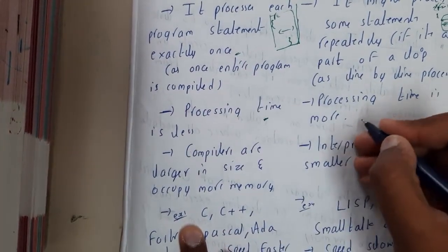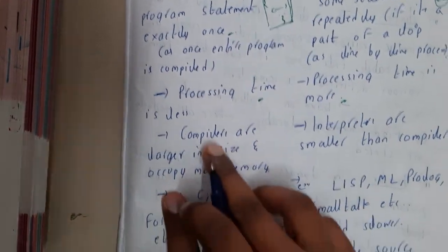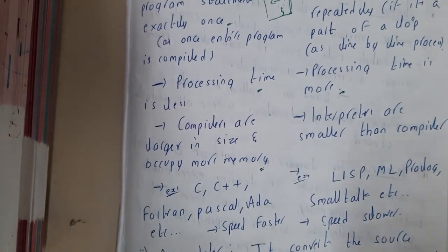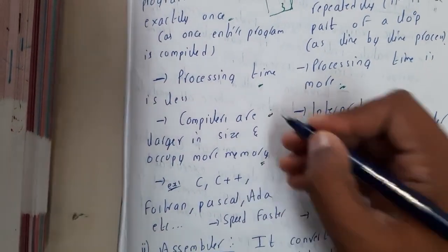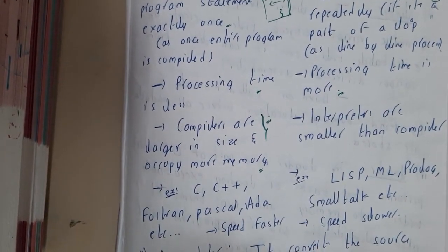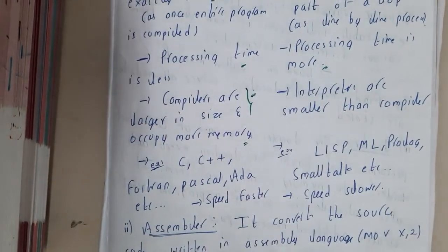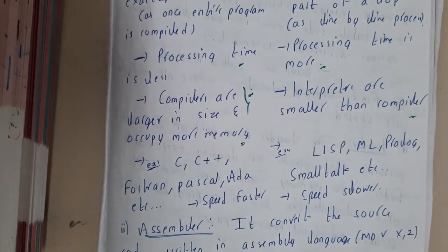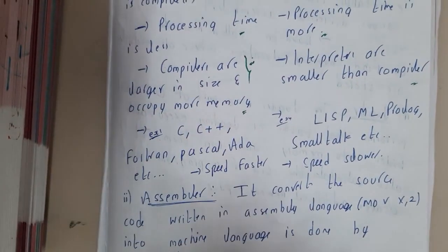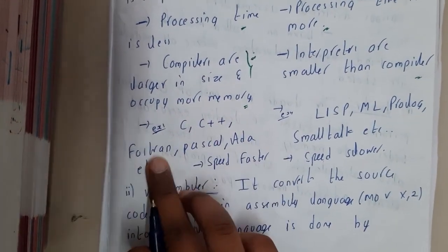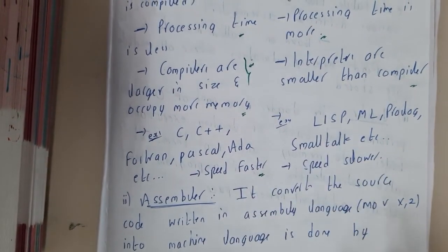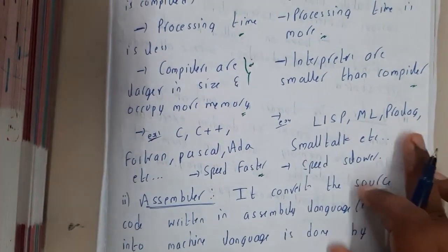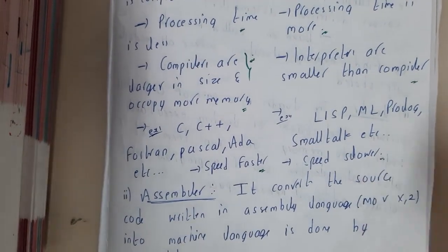Compiler processing takes less time because there is no repetition, whereas interpreter processing takes longer because of the chance of repetition. Compilers are large in size and occupy more memory — for a thousand-line program with multiple variables and registers, all that space must be allocated while the program is running. For an interpreter, executing line by line means one line may not depend on the one above, so no additional memory beyond minimum requirements is needed. Languages for compilers include C, C++, Fortran, Pascal, Ada — these are faster. Interpreter languages include Lisp, ML, Prolog, Smalltalk, and Python — these are slower.